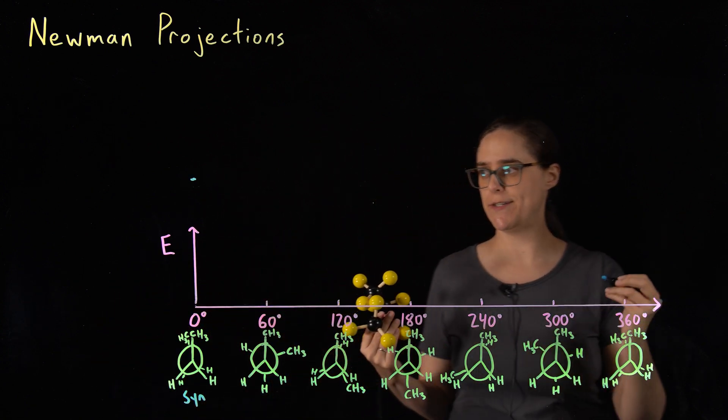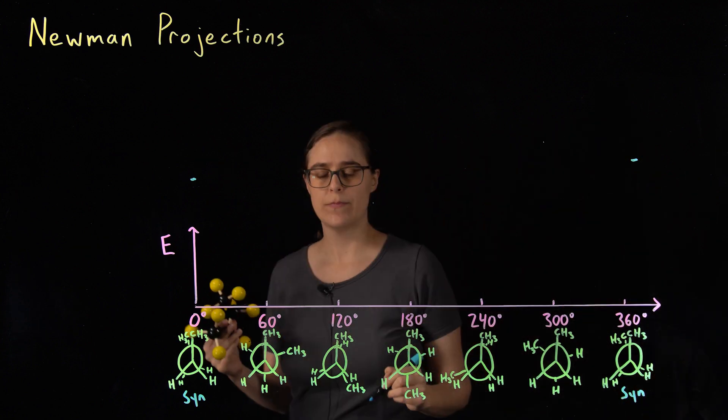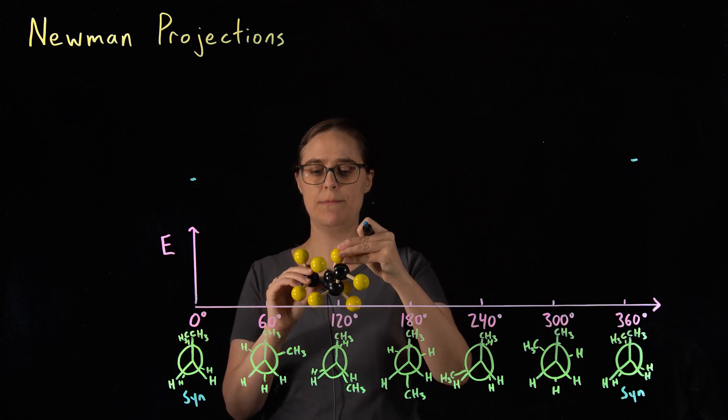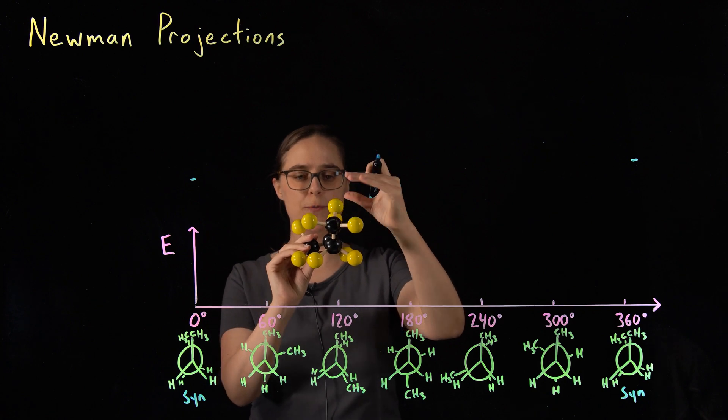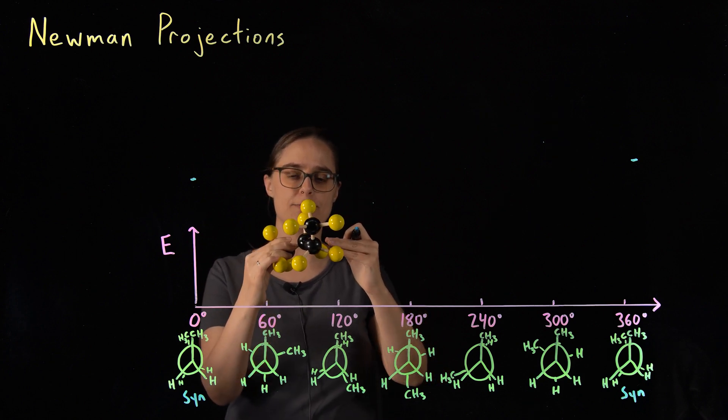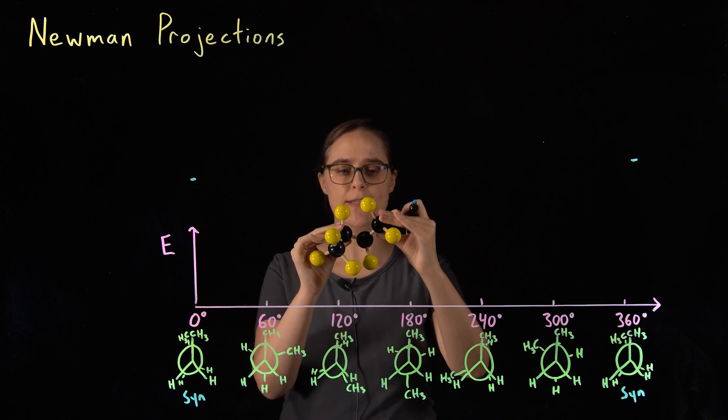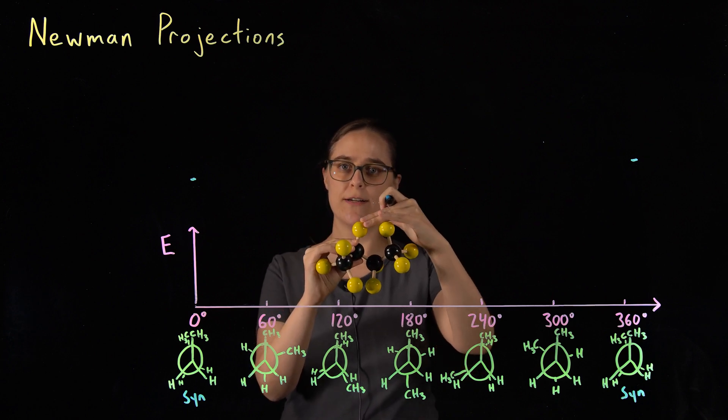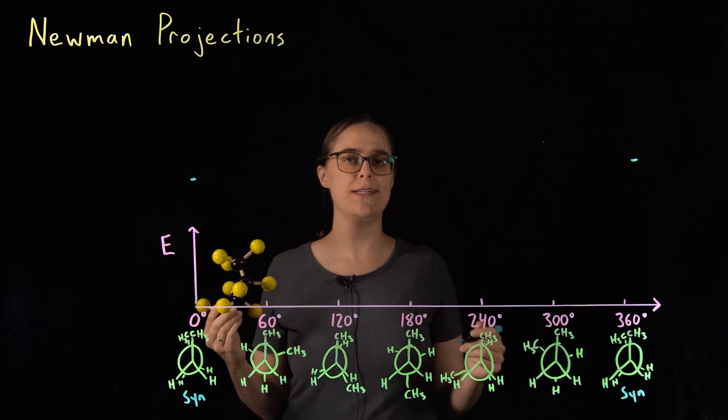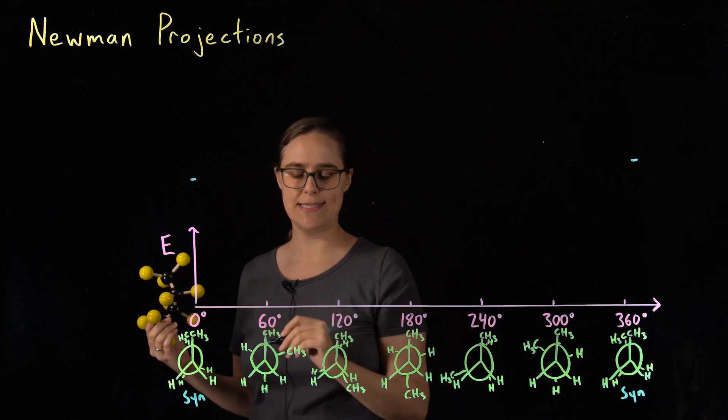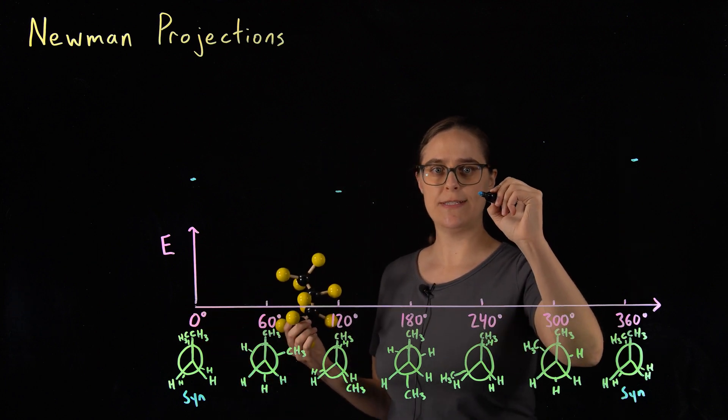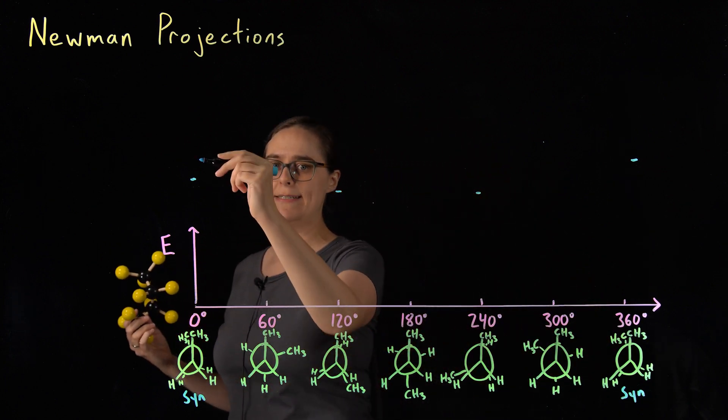Now zero degrees and 360 degrees are the same as each other. Our other eclipsed conformations are 120 and 240 degrees. These are still eclipsed, but they're not as bad. We have a methyl group eclipsing a hydrogen, a hydrogen eclipsing a methyl group, a hydrogen eclipsing another hydrogen. Let's rotate this to see how close these hydrogens can get. We can see that carbons one and three have hydrogens that are close to each other. Carbon two and carbon four have hydrogens that are close to each other. This is still steric hindrance, but it is not nearly as bad as this syn conformation. So 120 and 240, these are still going to be high potential energy. They're the same as each other, but they're not as high as syn conformation.